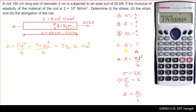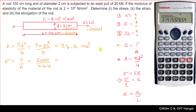Next, find the stress: sigma = force / area. The force is 20 kN = 20,000 N. Dividing 20,000 by 314.16 gives stress = 63.66 N/mm².